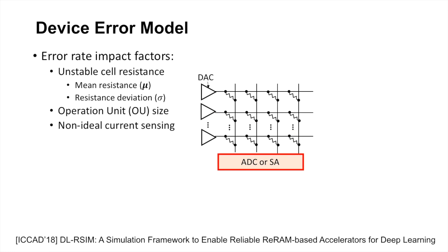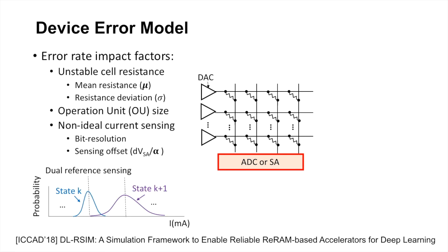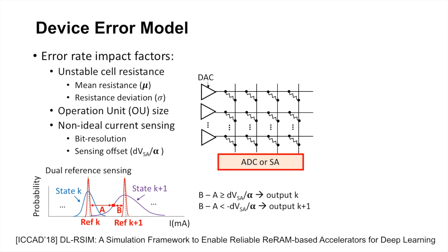Third, non-ideal current sensing components such as analog-to-digital converter (ADC) or sense amplifier (SA) also affect the error rates. Error-related parameters of a non-ideal ADC or SA include the bit resolution and the sensing offset, which equals the safety guard-band sensing voltage VSA divided by alpha, a constant related to the sensing speed of the sense amplifier. In our error simulation module, we implement the dual reference sensing scheme, which compares the accumulated bit-line current with the reference current of higher and lower states to determine the readout value. The correctness cannot be guaranteed when the difference between the two comparisons is less than the sensing offset. Our device error model takes all these factors into consideration when estimating error rates per bit-line.